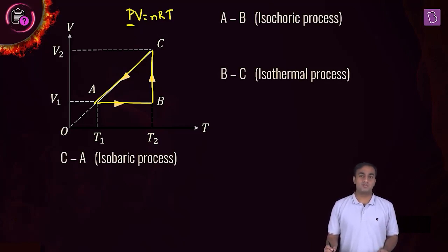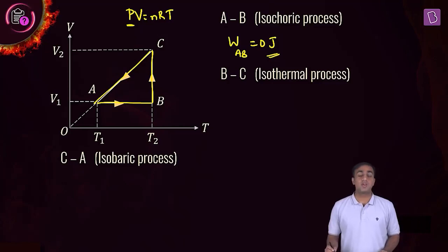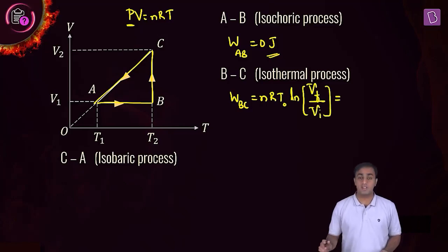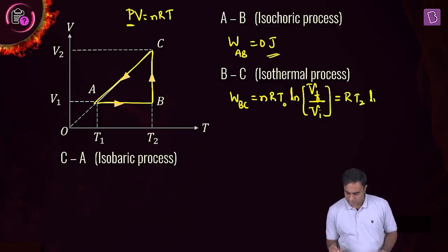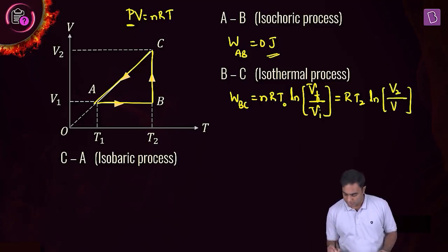Now that we have figured out which these processes are, let's calculate the work done in each. First, AB — it is an isochoric process. The volume does not change, so the work done by the gas will be 0. For the second one, isothermal process BC, the expression for work done will be nRT₀ into the natural logarithm of final volume by initial volume. With n = 1 mole and constant temperature T₂, this becomes R·T₂·ln(V₂/V₁).